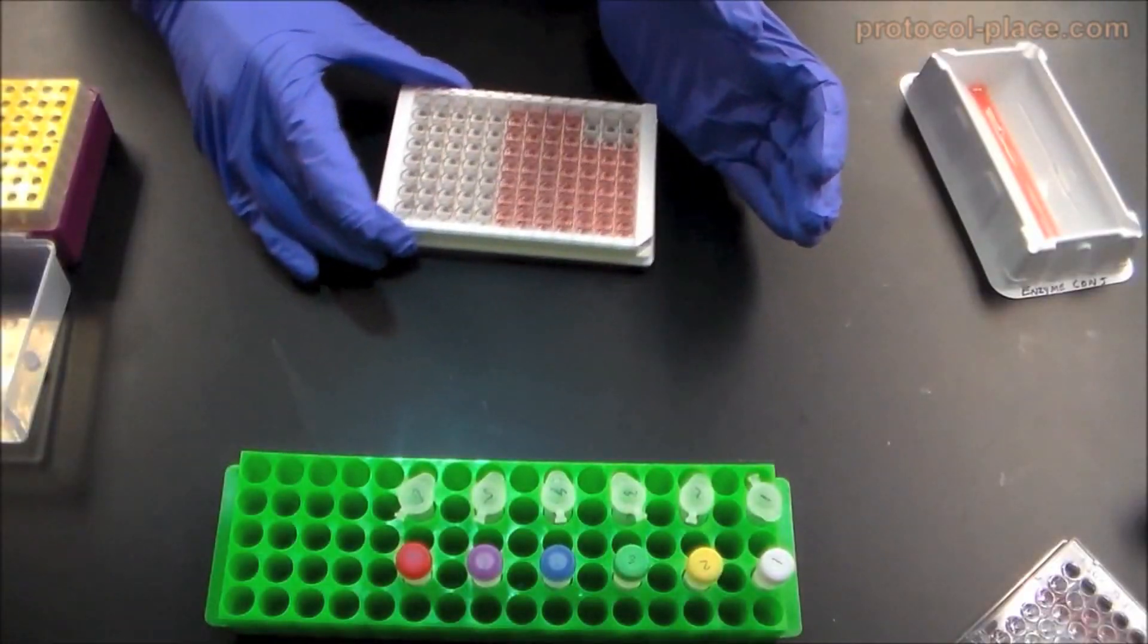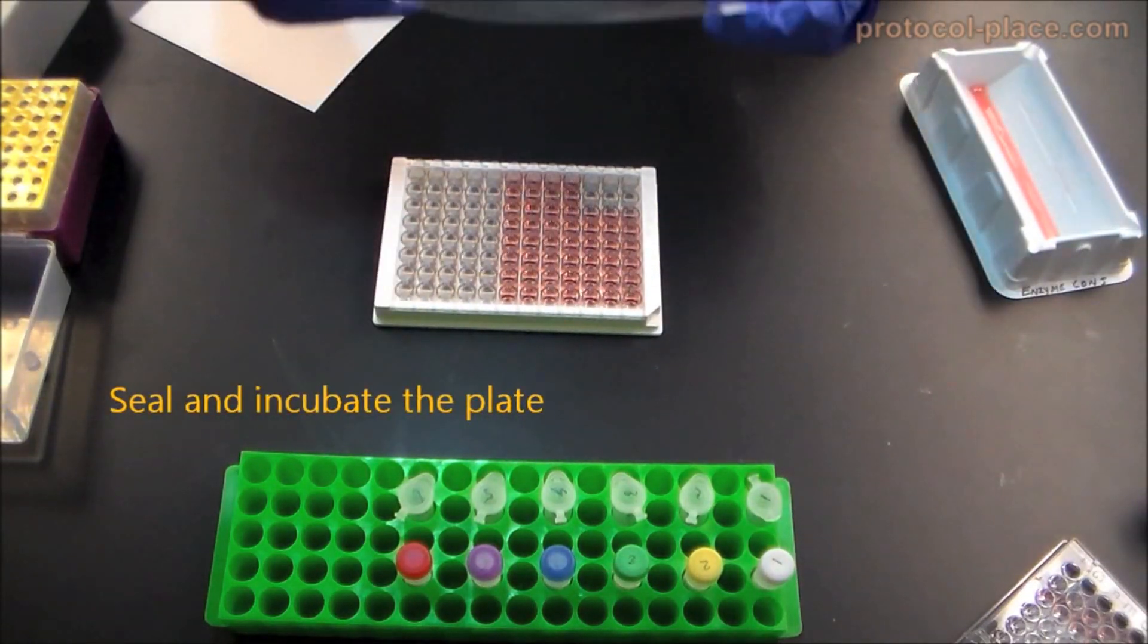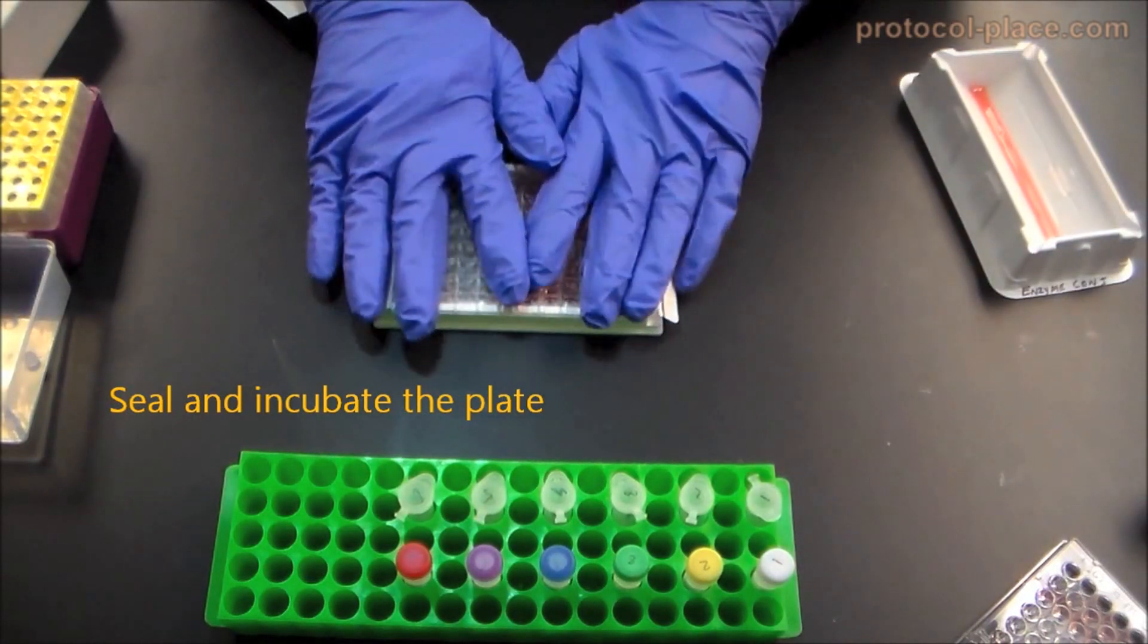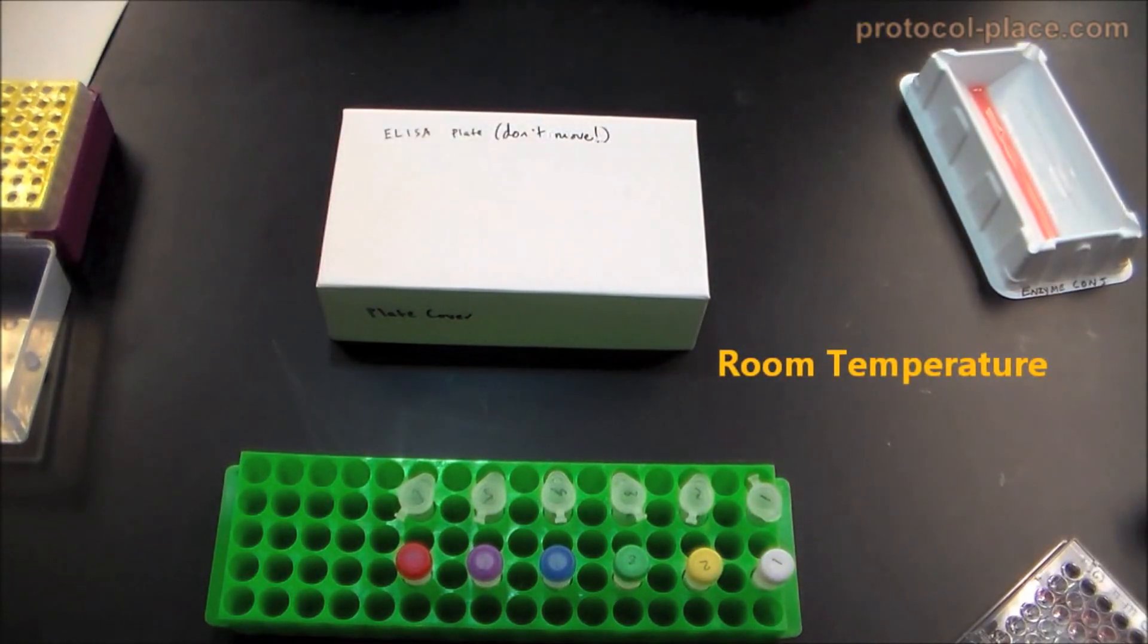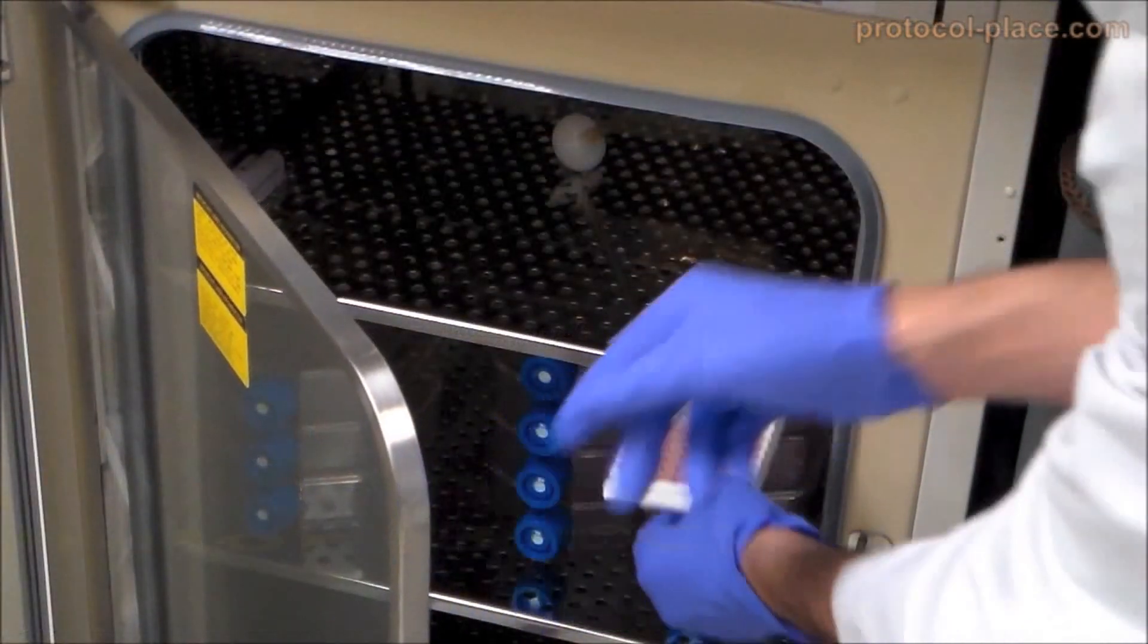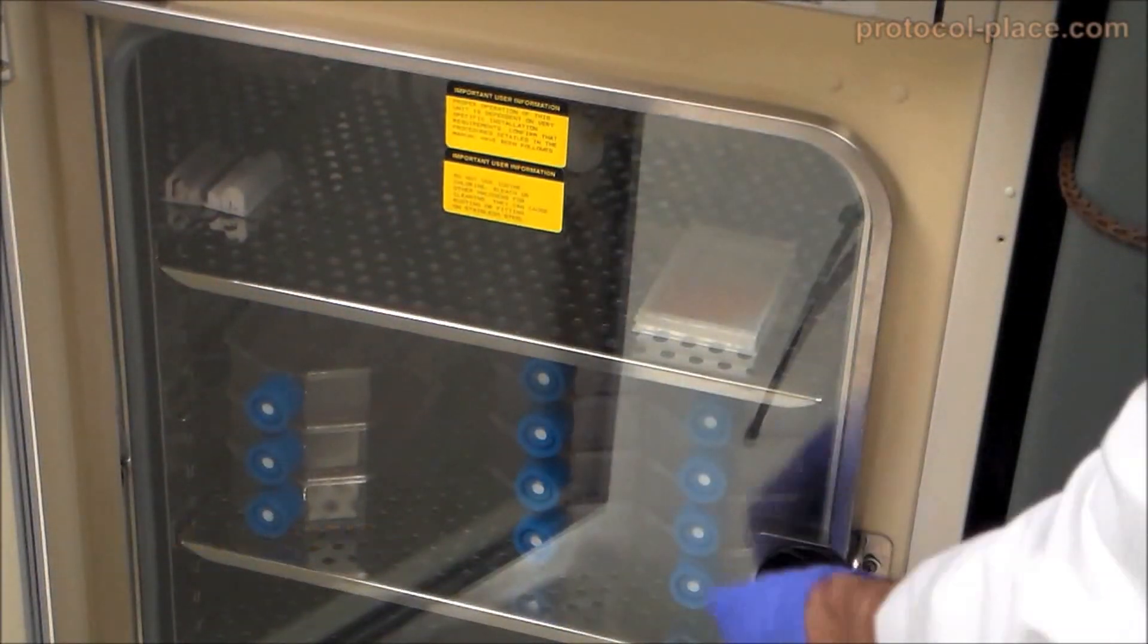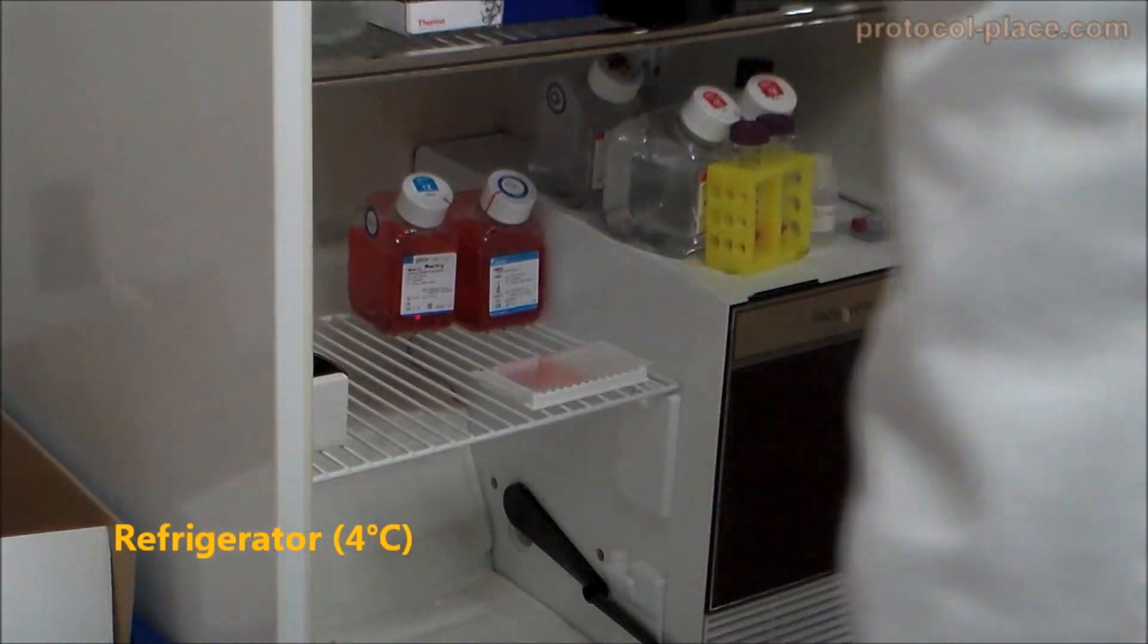After the mixture of samples and enzyme conjugate have been added to the ELISA plate, seal and incubate the plate as directed by the manufacturer. Incubation may take place on a bench top at room temperature, on a plate shaker, in an incubator set to 37 degrees Celsius, or in a refrigerator overnight depending on the specific kit which you are working with.